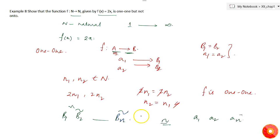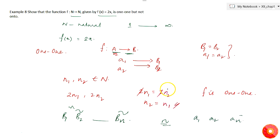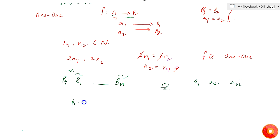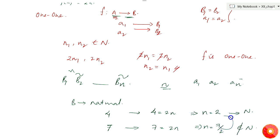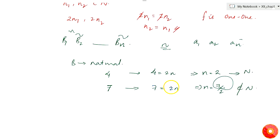Let's test this. Set B is the natural numbers. Take the number 4: if 4 = 2n, then n = 2, which belongs to the natural numbers. Now take an odd number, say 7: if 7 = 2n, then n = 7/2, which does not belong to natural numbers. So it doesn't belong to the first set, which means the given function f from N to N is not onto.